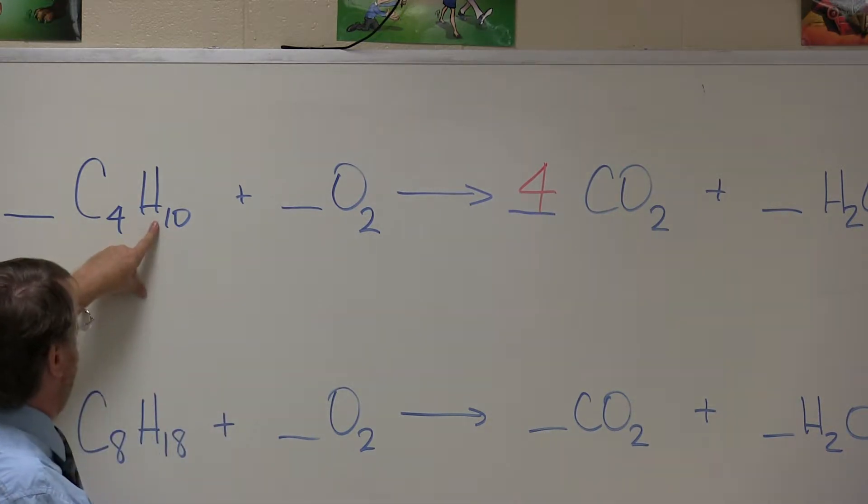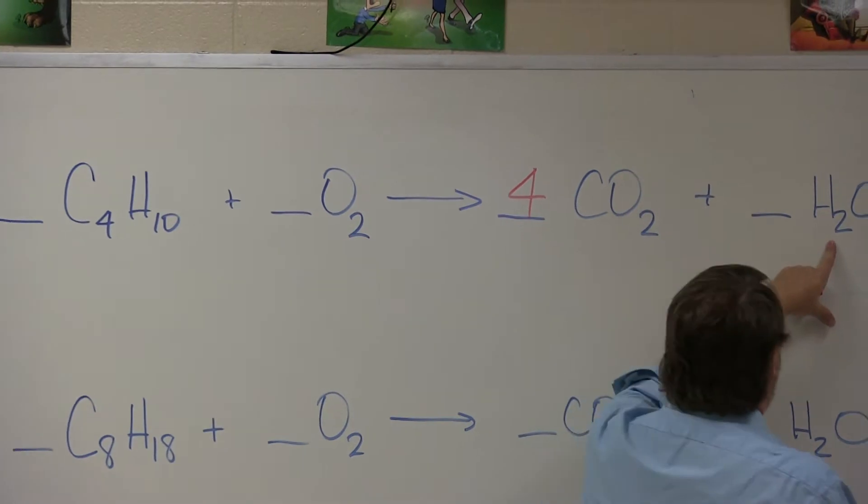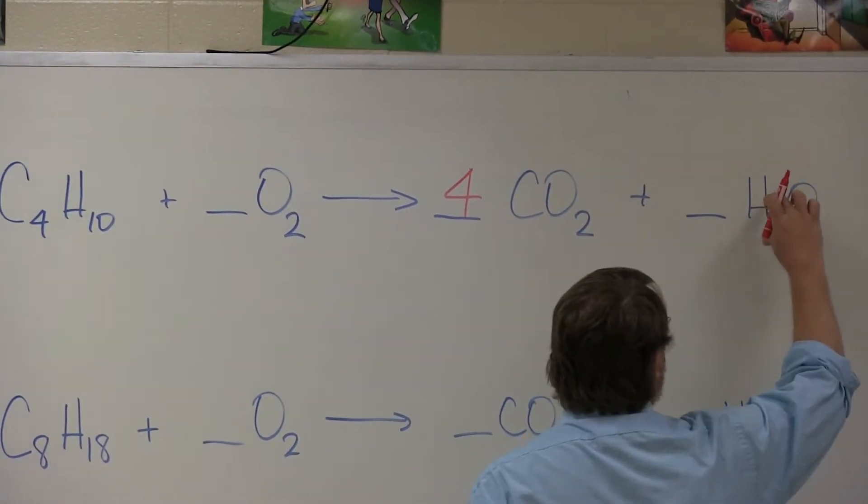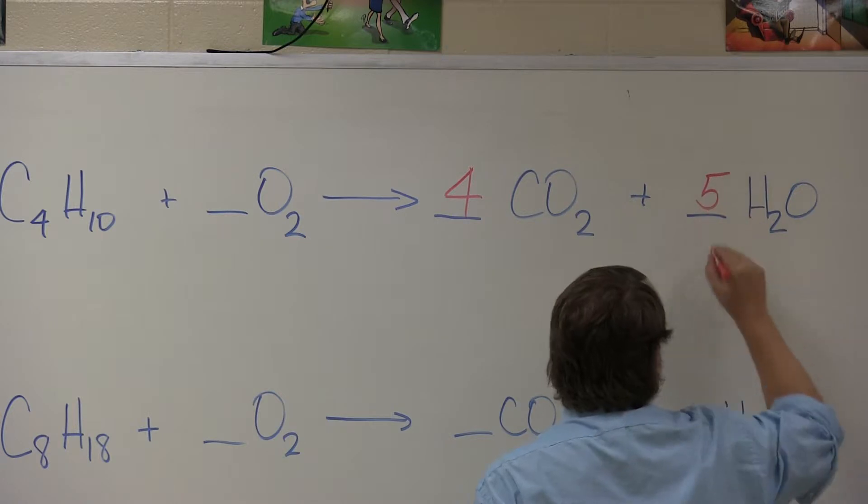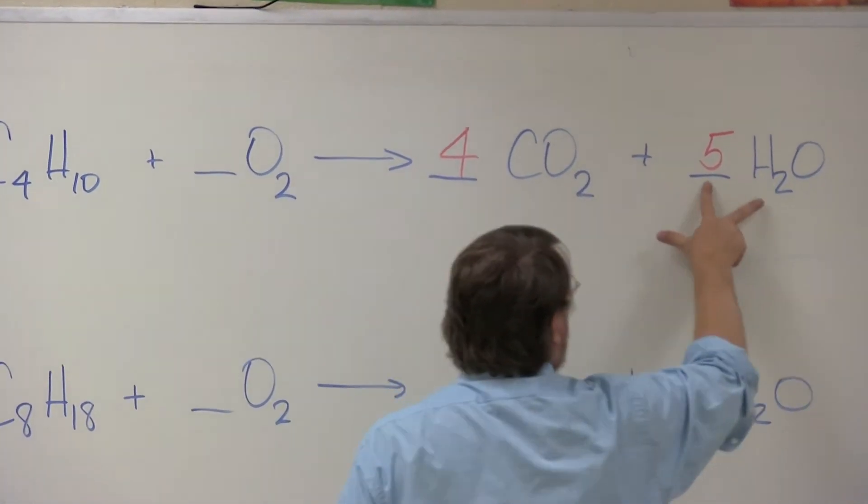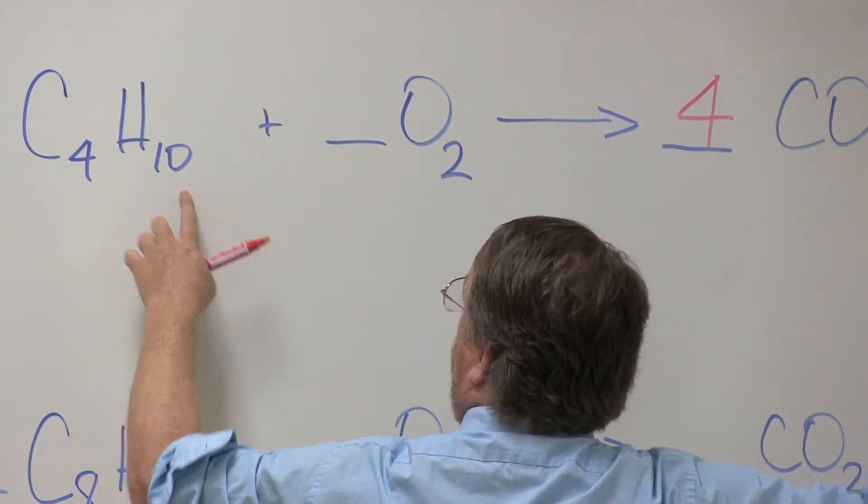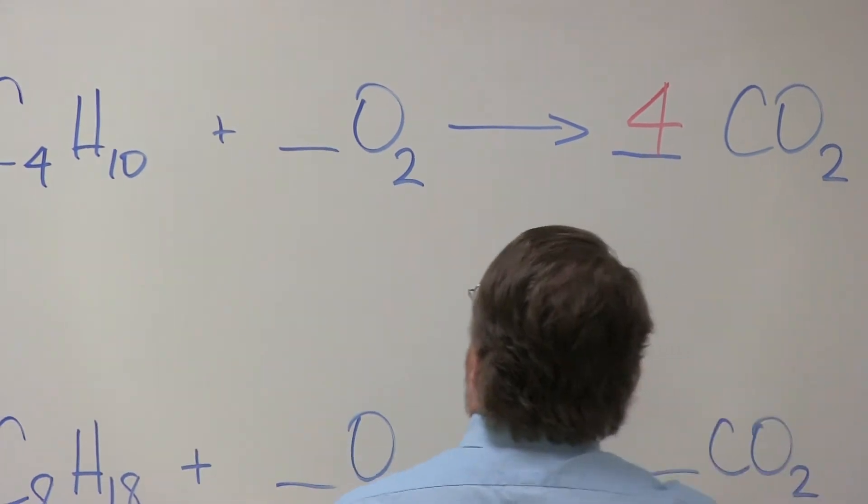Now I'm going to go to my hydrogen. Here I have ten hydrogens. Over here I have two hydrogens. I want to make this ten hydrogens. I'm not going to change this two. I'm going to put a five in here because five times two is ten. So now five times two is ten. One times ten is ten. So I have balanced the number of hydrogens.